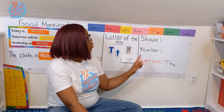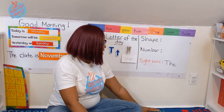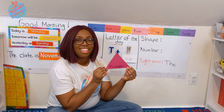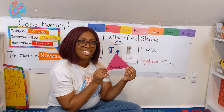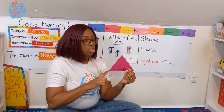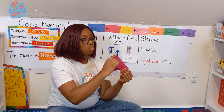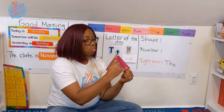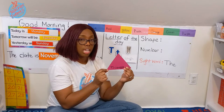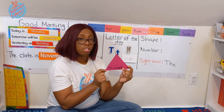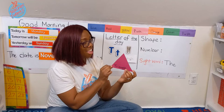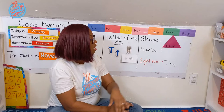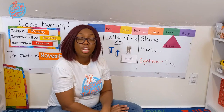Let's go over here and find out our shape for the day. Here's the shape for the day. Do you know what shape this is? Well, it has three straight lines — one, two, three — and three pointy angles, one, two, three — sharp corners. It's a triangle. Our shape for the day is triangle.